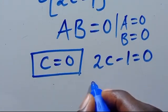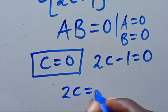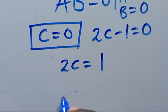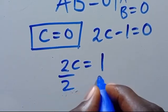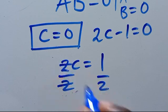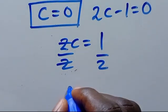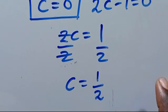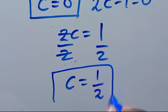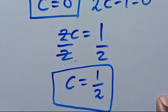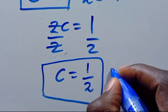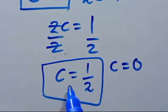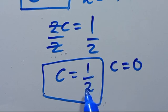From 2C minus 1 equals 0, taking 1 to the other side gives 2C equals 1, then dividing both sides by 2 gives C equals 1 over 2. So we have two solutions: C equals 0 and C equals 1 over 2.